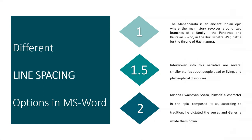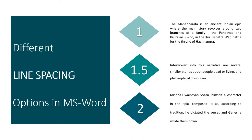Now let's talk about different line spacing options in MS Word. MS Word has many different options for line spacing, but we use only a few of them. On the right-hand side we have three paragraphs. The first paragraph has a line spacing of 1.0, which is the smallest of all three — that's why the adjacent lines are very close to each other. The second paragraph has a line spacing of 1.5, which looks good and makes the paragraph easy to read.